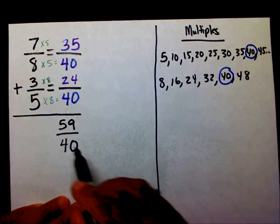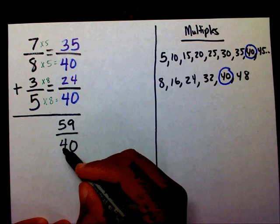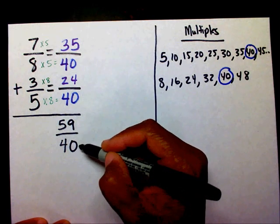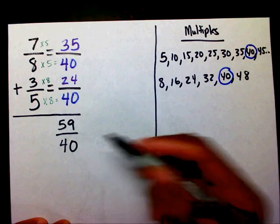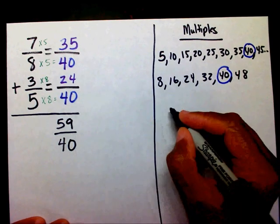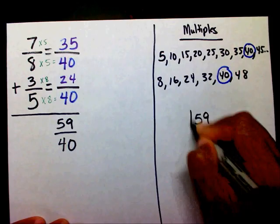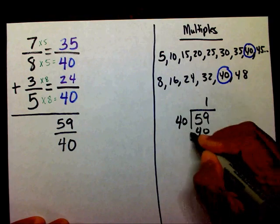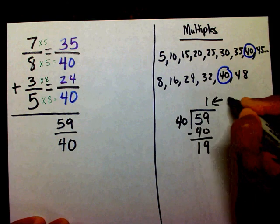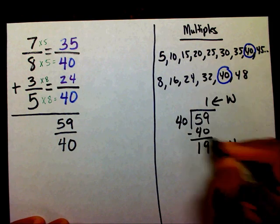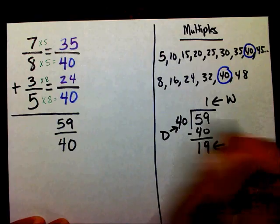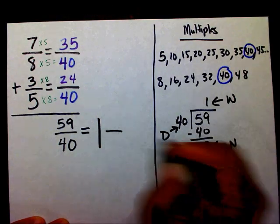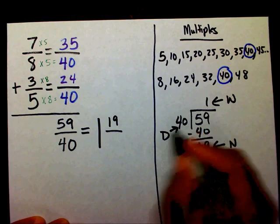This is an improper fraction because my numerator is larger than my denominator, so I need to change it into a mixed number. I'm going to say fifty-nine divided by forty. Forty goes into fifty-nine one time. Subtract, that's going to be nineteen. This is my whole number, nineteen is my numerator, and forty is my denominator. So my answer is one and nineteen fortieths.